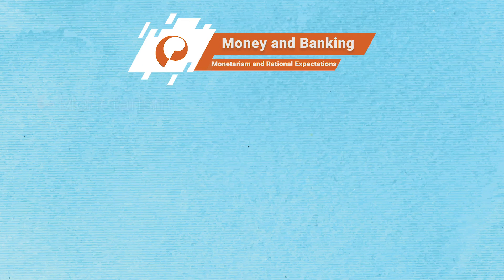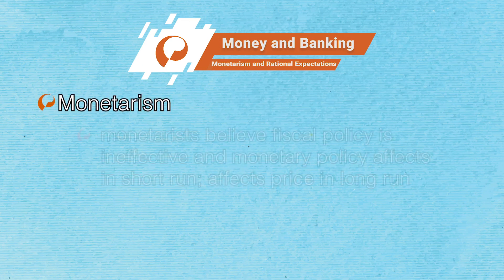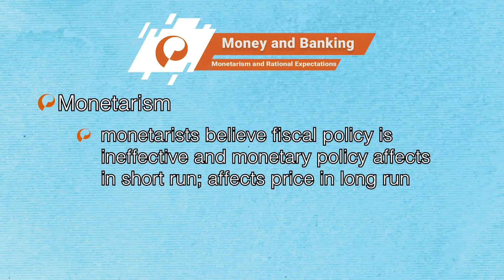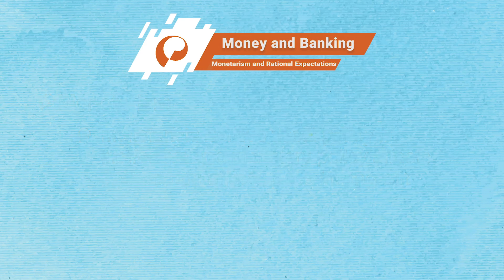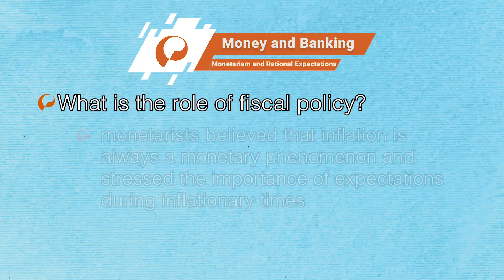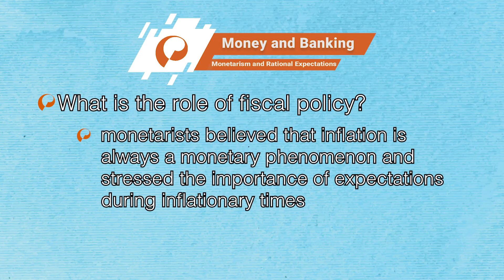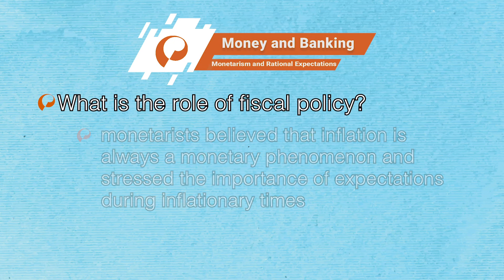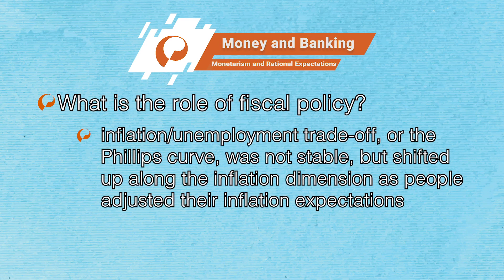It is in these years that a new theory called monetarism came into the fold. Monetarists believed that fiscal policy is ineffective at stimulating the economy and that monetary policy can affect economic activity in the short run, while it affects only prices and inflation in the long run. These economists believed that due to long policy lags, monetary policy would disrupt the economy instead of stabilizing it, and suggested a fixed rate of growth of the money supply as the optimal policy. Monetarists believed that inflation is always a monetary phenomenon, and stressed the importance of expectations during inflationary times. Milton Friedman, the most prominent of the monetarists, pointed out that the inflation-unemployment trade-off — the Phillips curve — was not stable, but shifted up along the inflation dimension as people adjusted their inflation expectations.